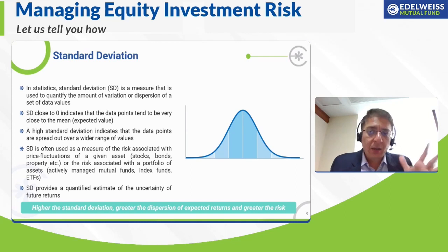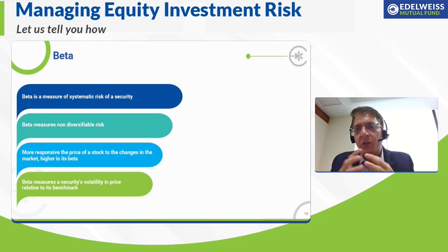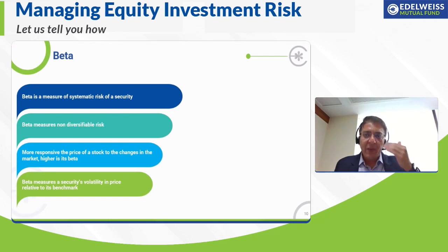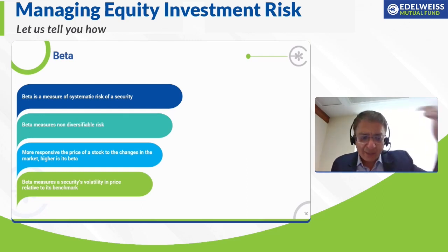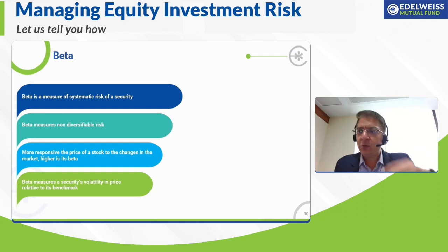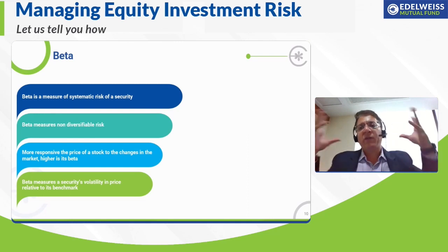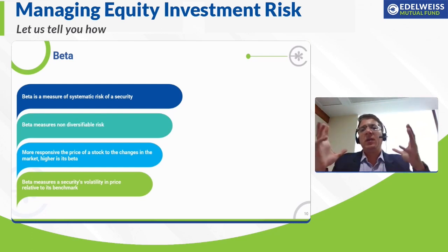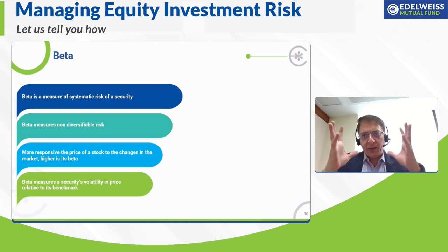The third term for measuring risk is beta. A few minutes back we spoke about systematic risk, which is the non-diversifiable market risk. Beta basically measures that systematic risk. When investing in the markets, you are exposing your investment to market risk. If you think of a diversified index like Nifty 50 or Sensex, the beta of these indices is one.